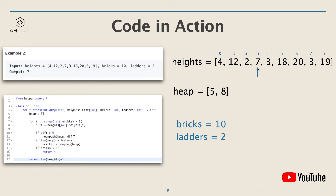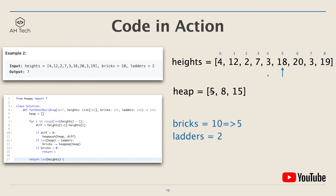Next is index 3: the height difference is 5, so we push 5 into the heap. Since 5 is smaller than 8, it goes to the front of the heap. Building 3 to 4 at index 4 is a negative height difference, so we jump down. At index 5 the height difference is 18 minus 3 = 15, so we push 15 into the heap. Now we have three height differences in the heap, meaning we are running out of ladders since we only have two.